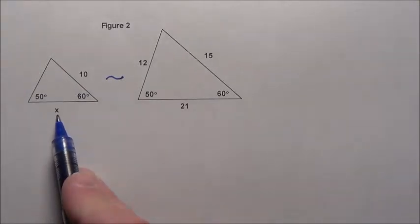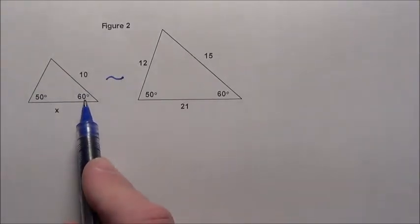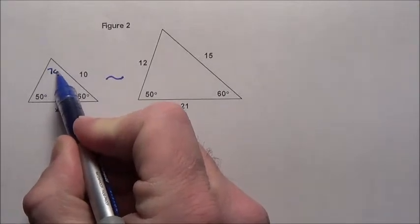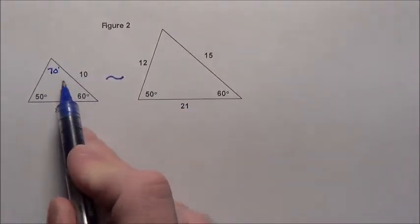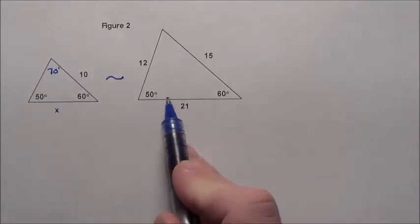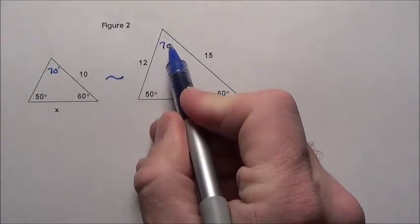So what we have to do is figure out what x's value is here. Notice x is between the 50 and 60. That means that angle up there would have to be 70 because all triangles add up to 180. Here is 50, 60, so there is 70.